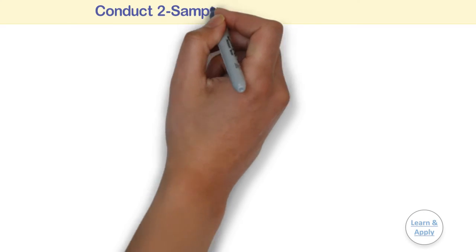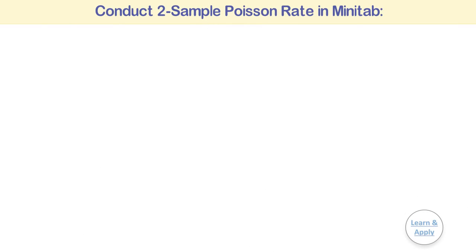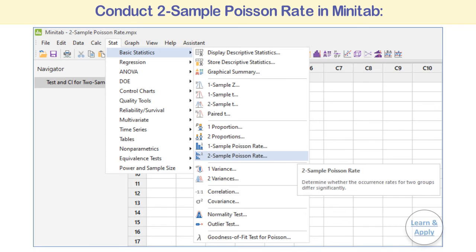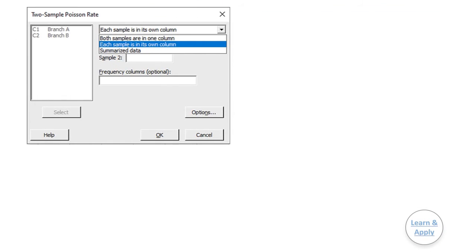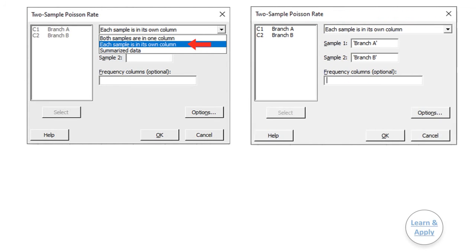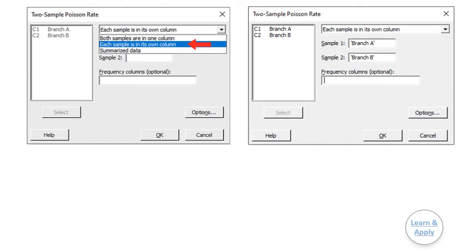Conduct a two-sample Poisson rate in Minitab. Select Stat, Basic Statistics, and then Two Sample Poisson Rate. From the drop-down list, select each sample is in its own column. In Sample 1, enter Branch A. In Sample 2, enter Branch B.